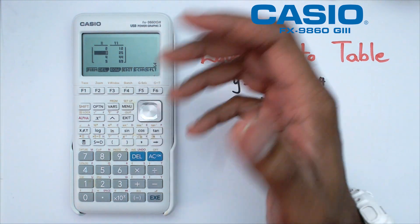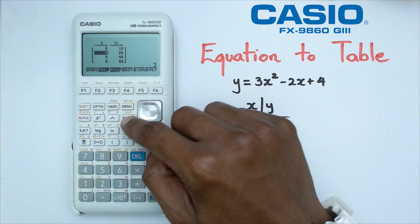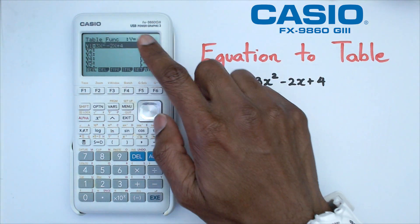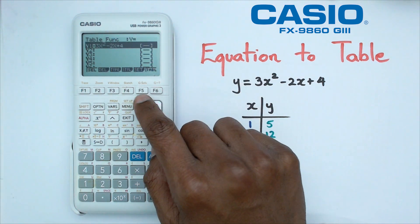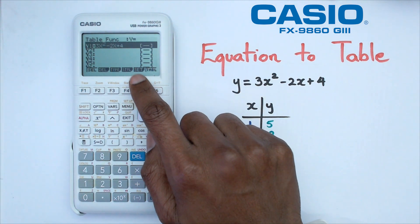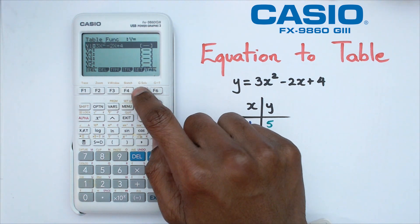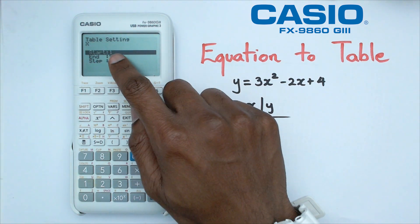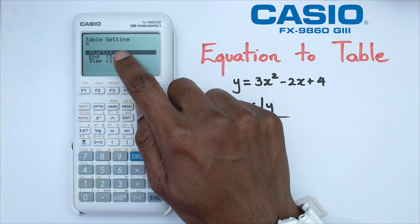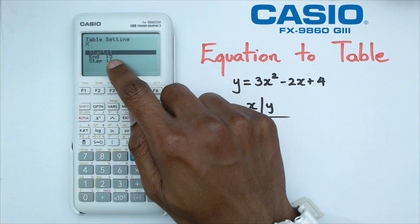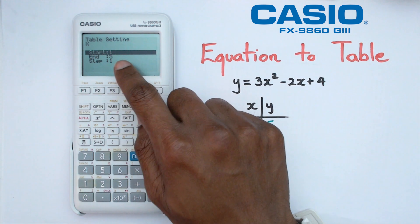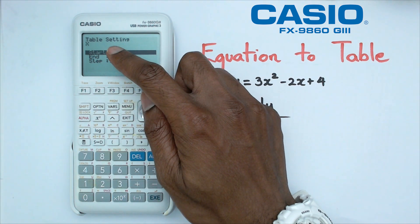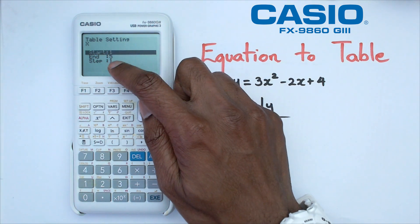Let's say you don't actually want to go between 1 to 5. Instead you want to go from -5 to 5. You can click on exit and come back to the main table function menu. F5 gets you something called set. That's going to tell you your starting value for x and your end value of x and also how much you want those values to increase by. Currently it's set up as starting of 1, end of 5, and step of 1.